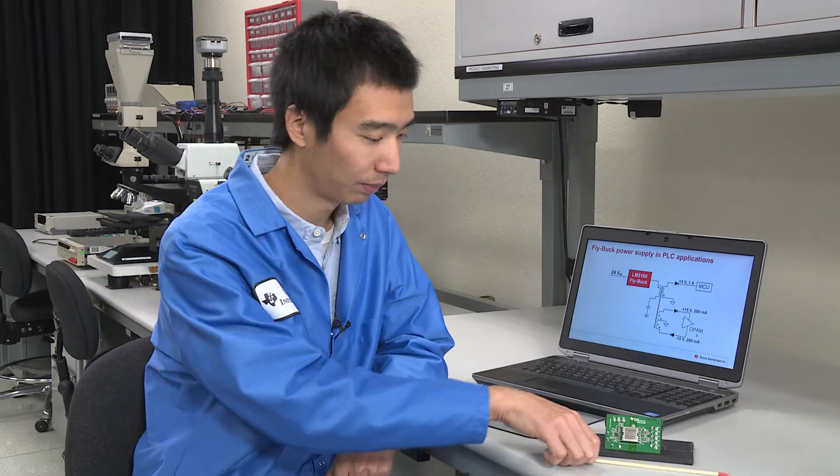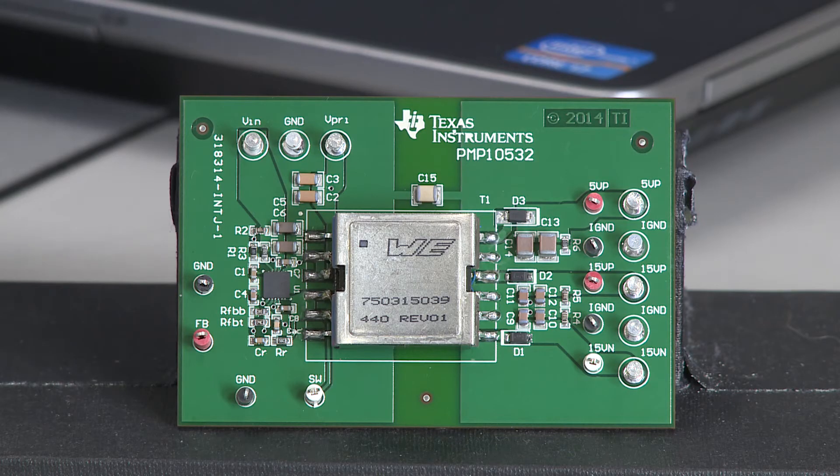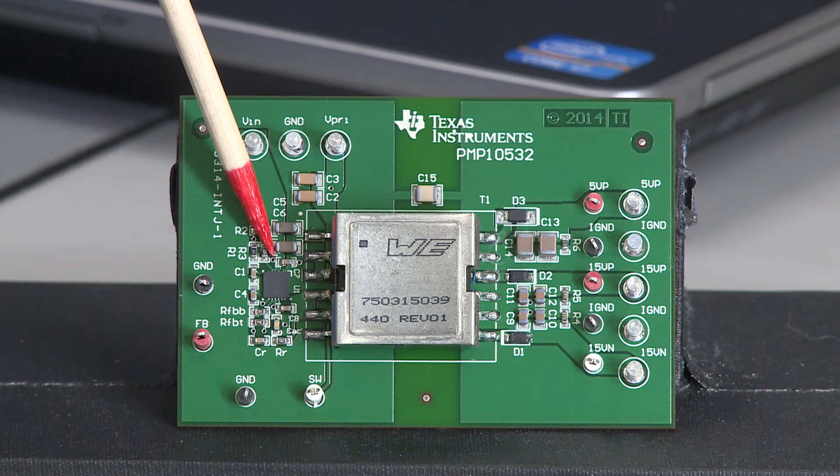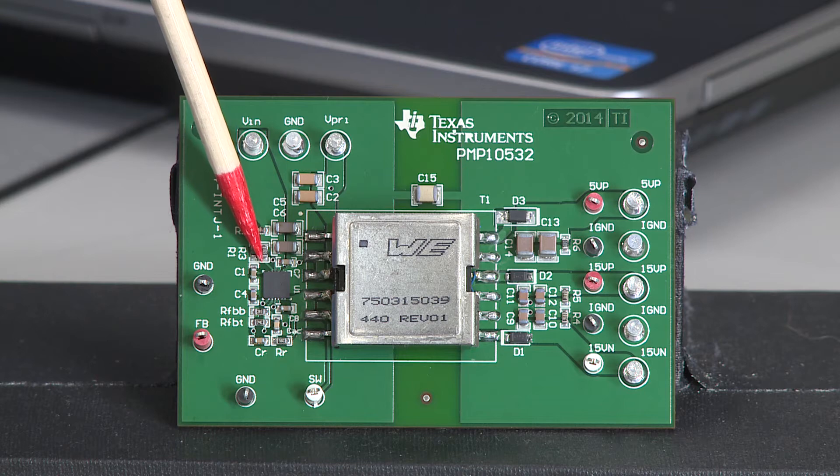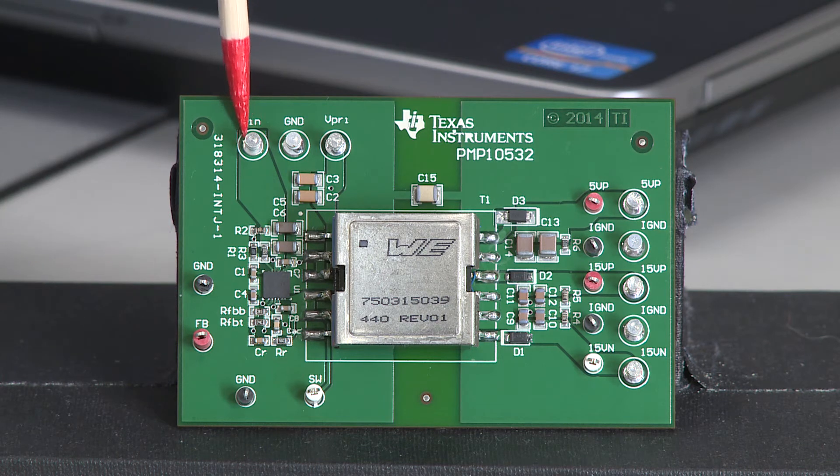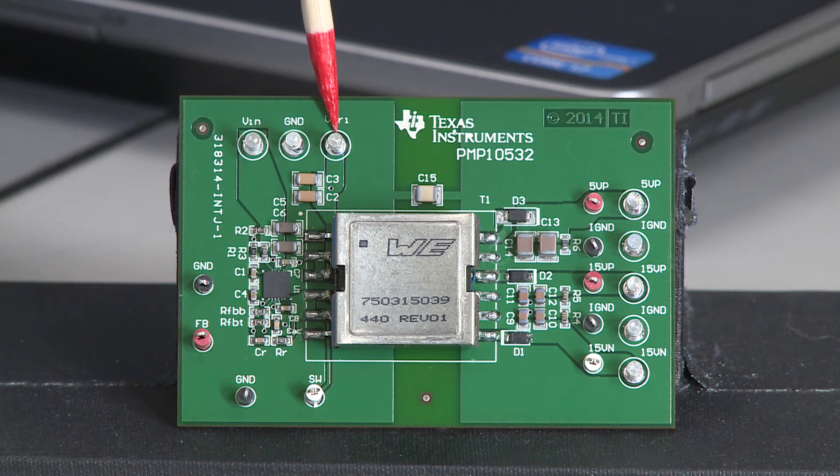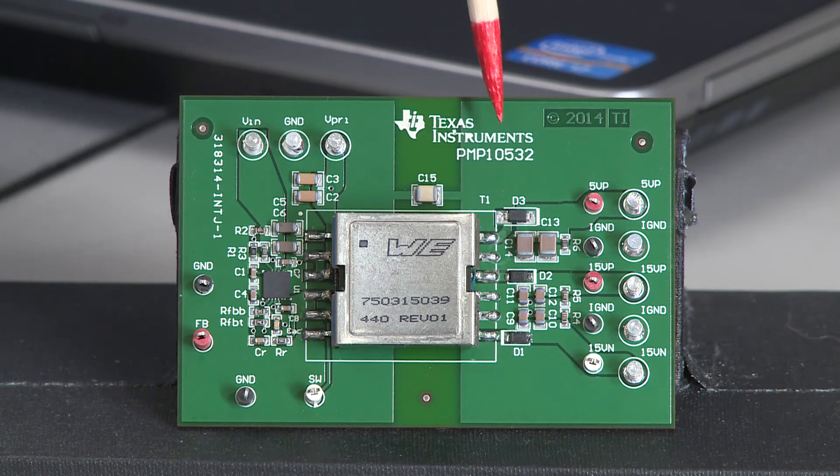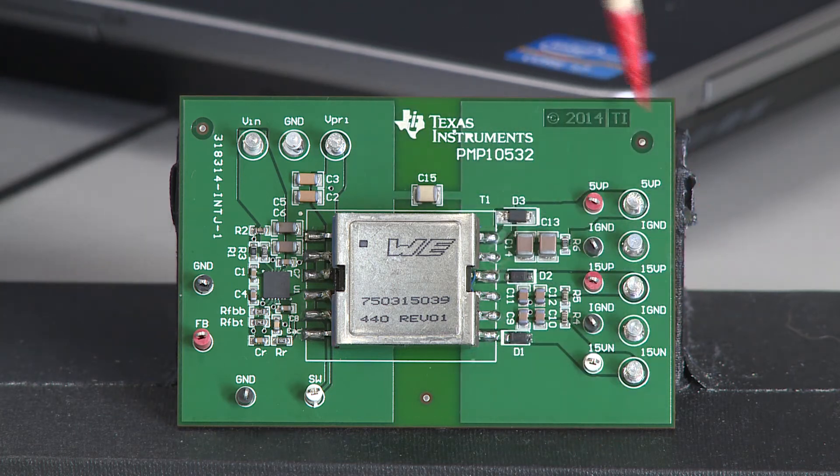So let's look at the reference design board. This is the LM5160 flyback reference design board. This is the LM5160 IC, and on this side of the board it's the primary side, the non-isolated side. It will take the 24 volts VIN here and create a primary side output here.